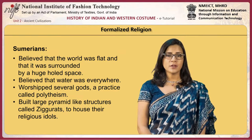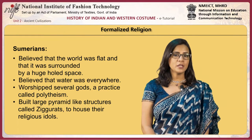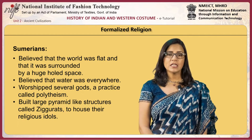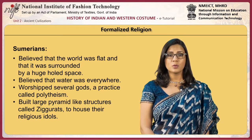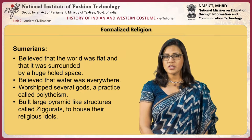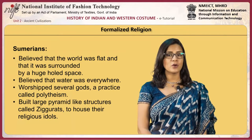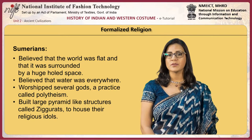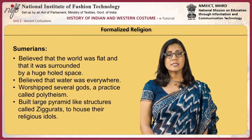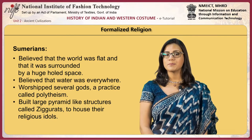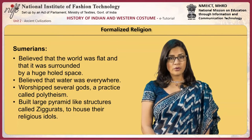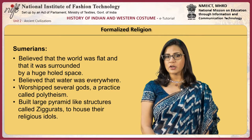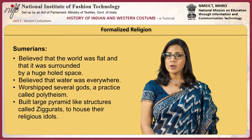Sumerian religion was the first to be recorded. They believed that the world was flat and surrounded by a huge void, and that water was everywhere. They worshipped several gods, a practice called polytheism. The religious priests were seen as earthly representatives of God and therefore considered the most powerful people in Sumerian society. Later, the warrior kings would take that position. They built large pyramid-like structures called ziggurats to house their religious idols.